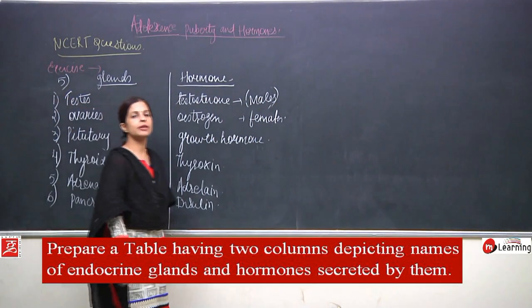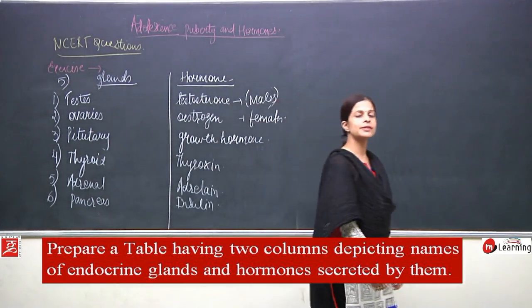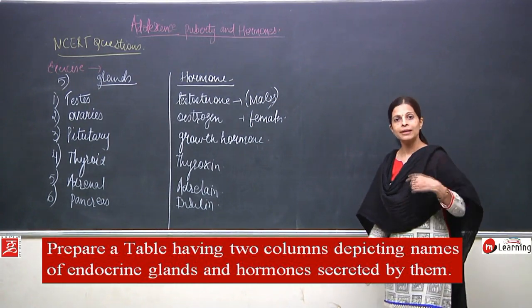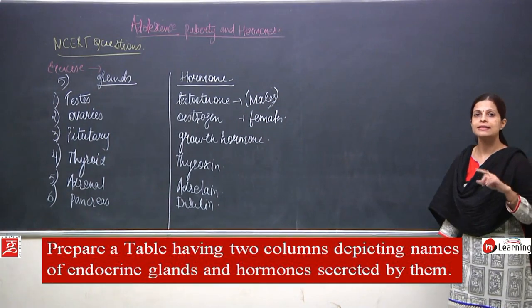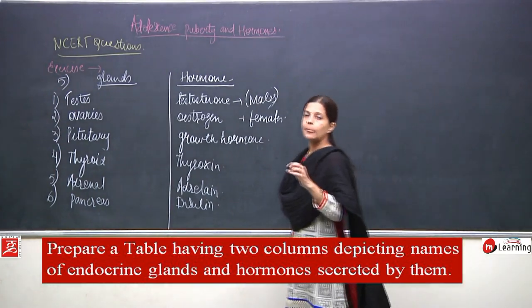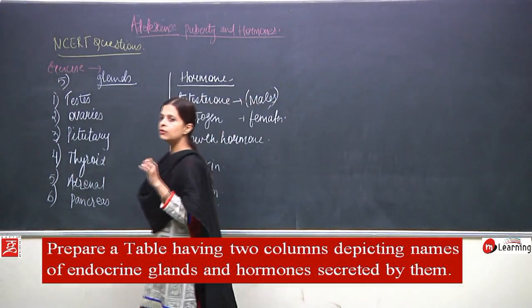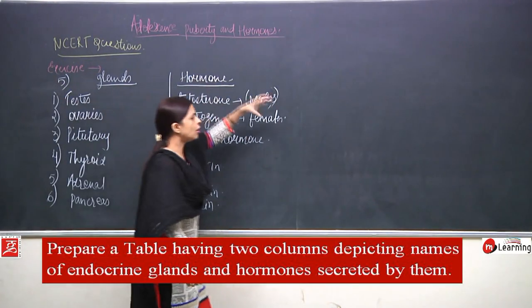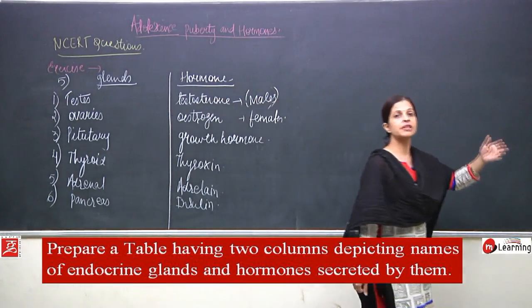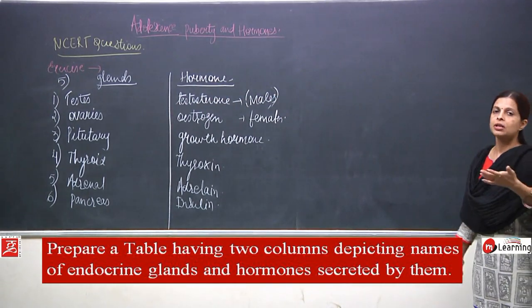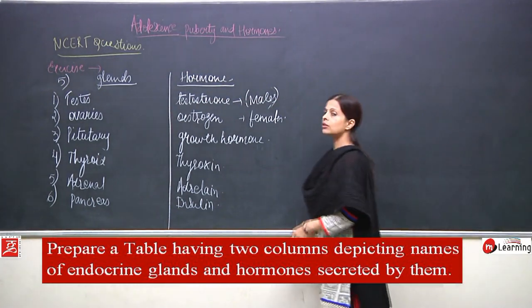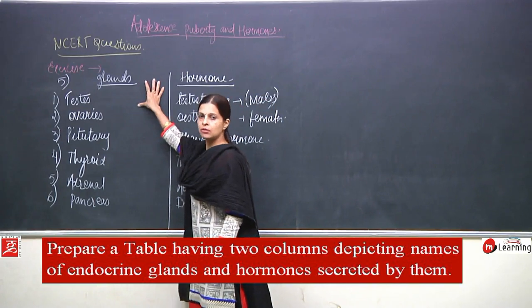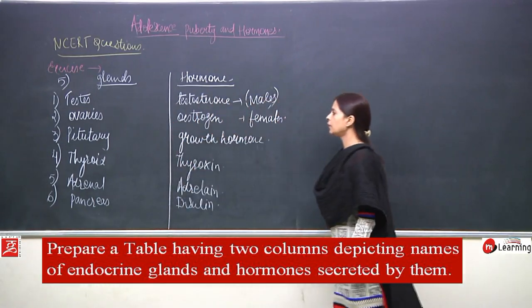These are all the endocrine glands. Why are they known as endocrine glands? Because they are responsible for the secretion of certain chemicals. These glands are also known as ductless glands. Why? Because these glands do not have ducts - they are directly released into the blood. From the blood, they reach the particular organ where they have to act, which is known as the target area or target site.